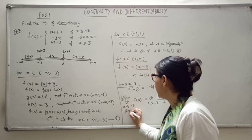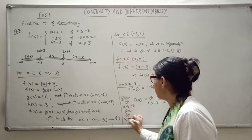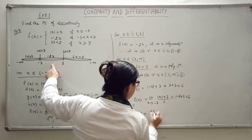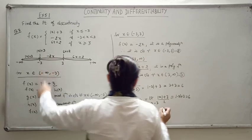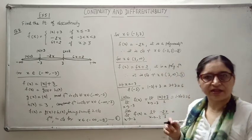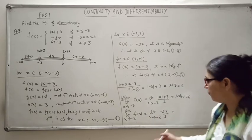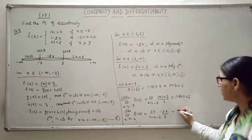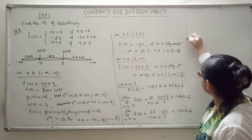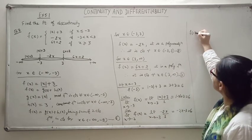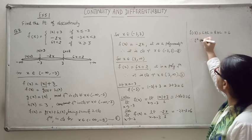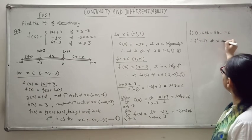Now the right hand limit: limit x tends to minus 3 plus of f(x) equals minus 2 times minus 3 equals 6. So we can see f(minus 3) equals left hand limit equals right hand limit equals 6. Therefore the function is continuous at x equals minus 3.